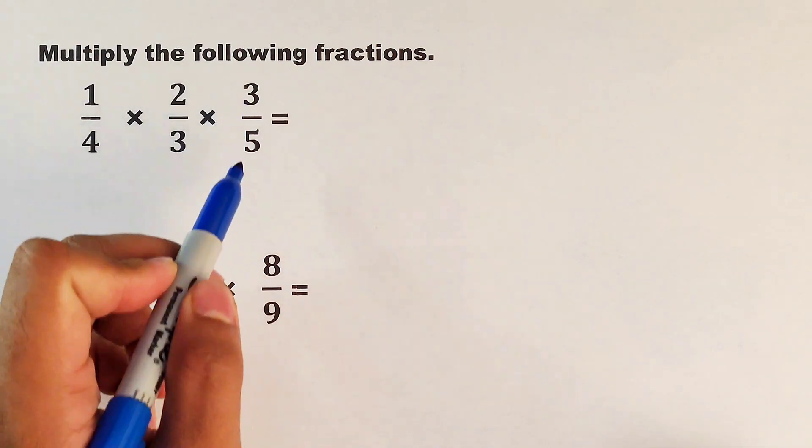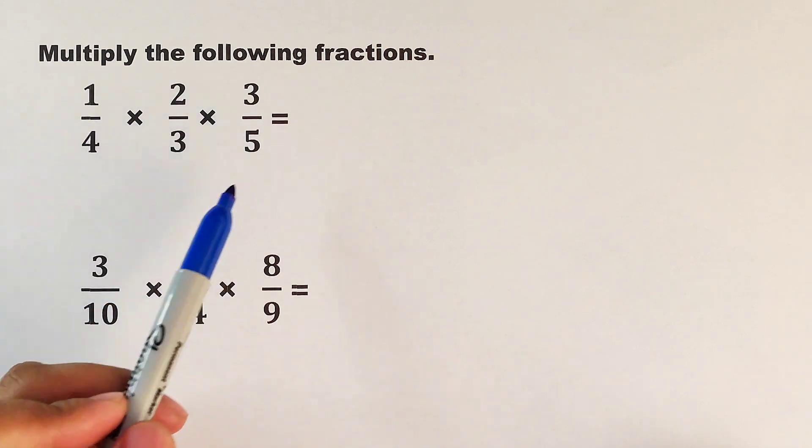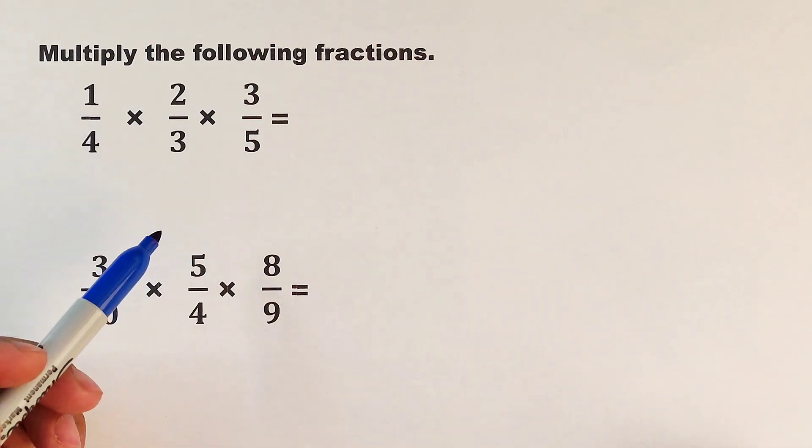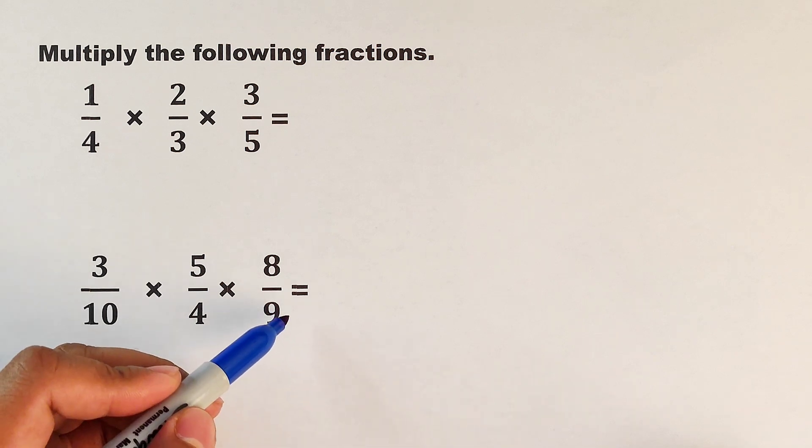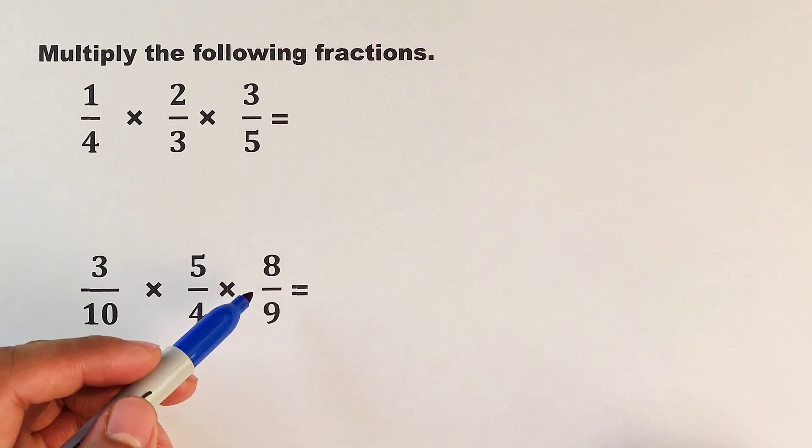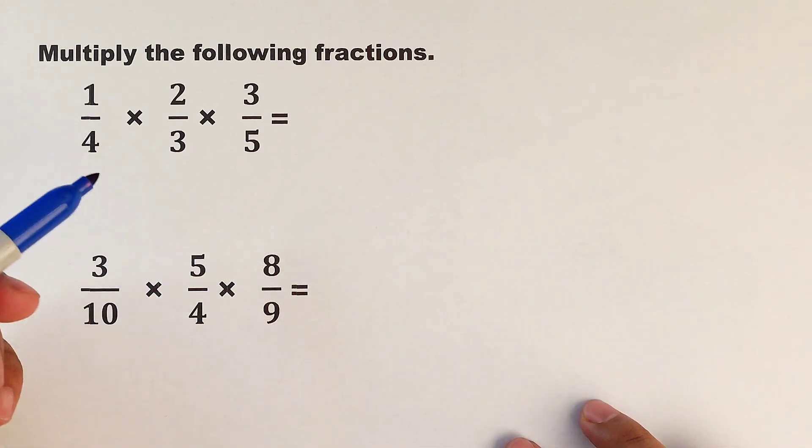...times 3 over 5. To multiply these fractions, we will multiply the numerators and the denominators. But to make our life easier in multiplying these fractions, we can use the cancellation method. Upon observing these fractions, we can...